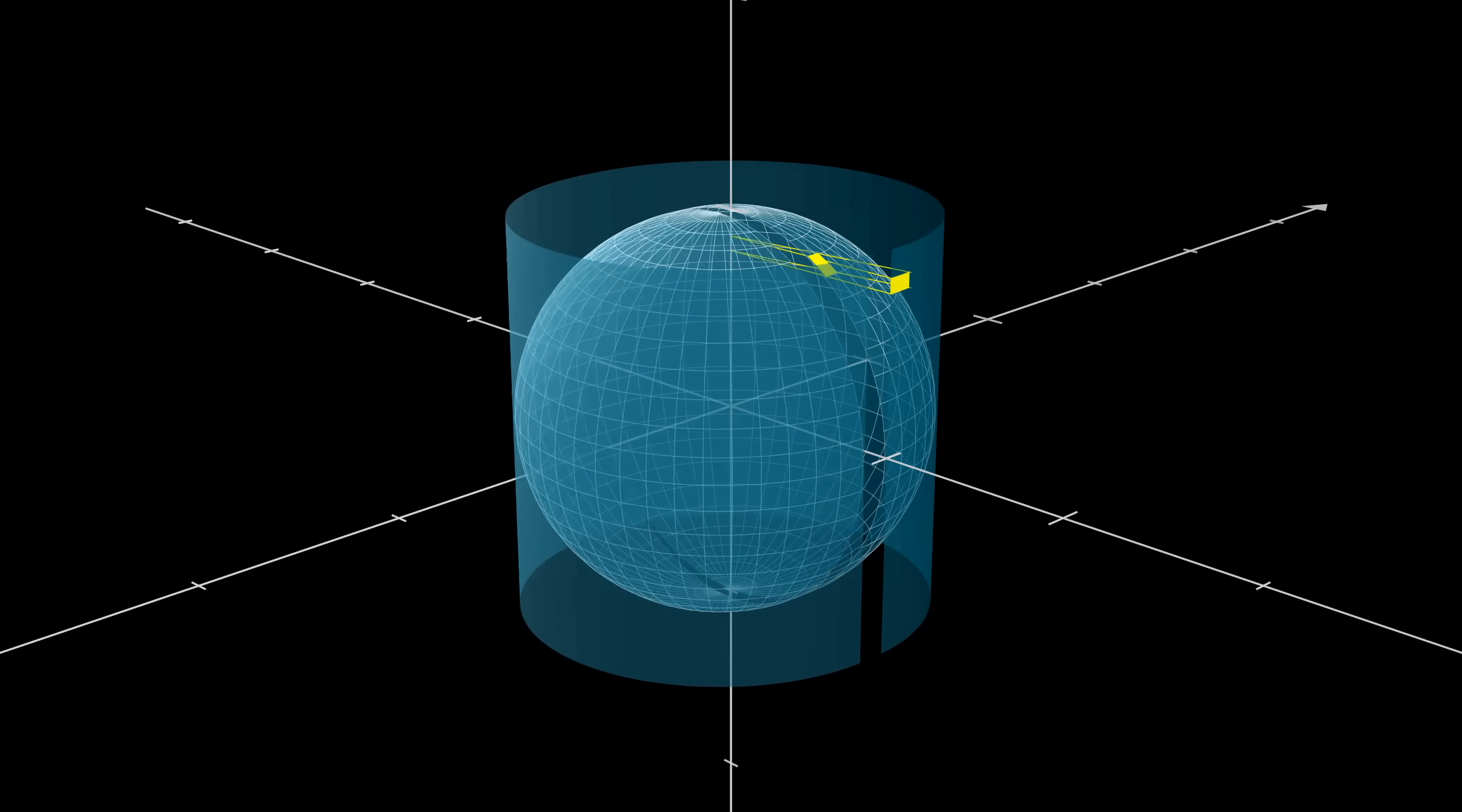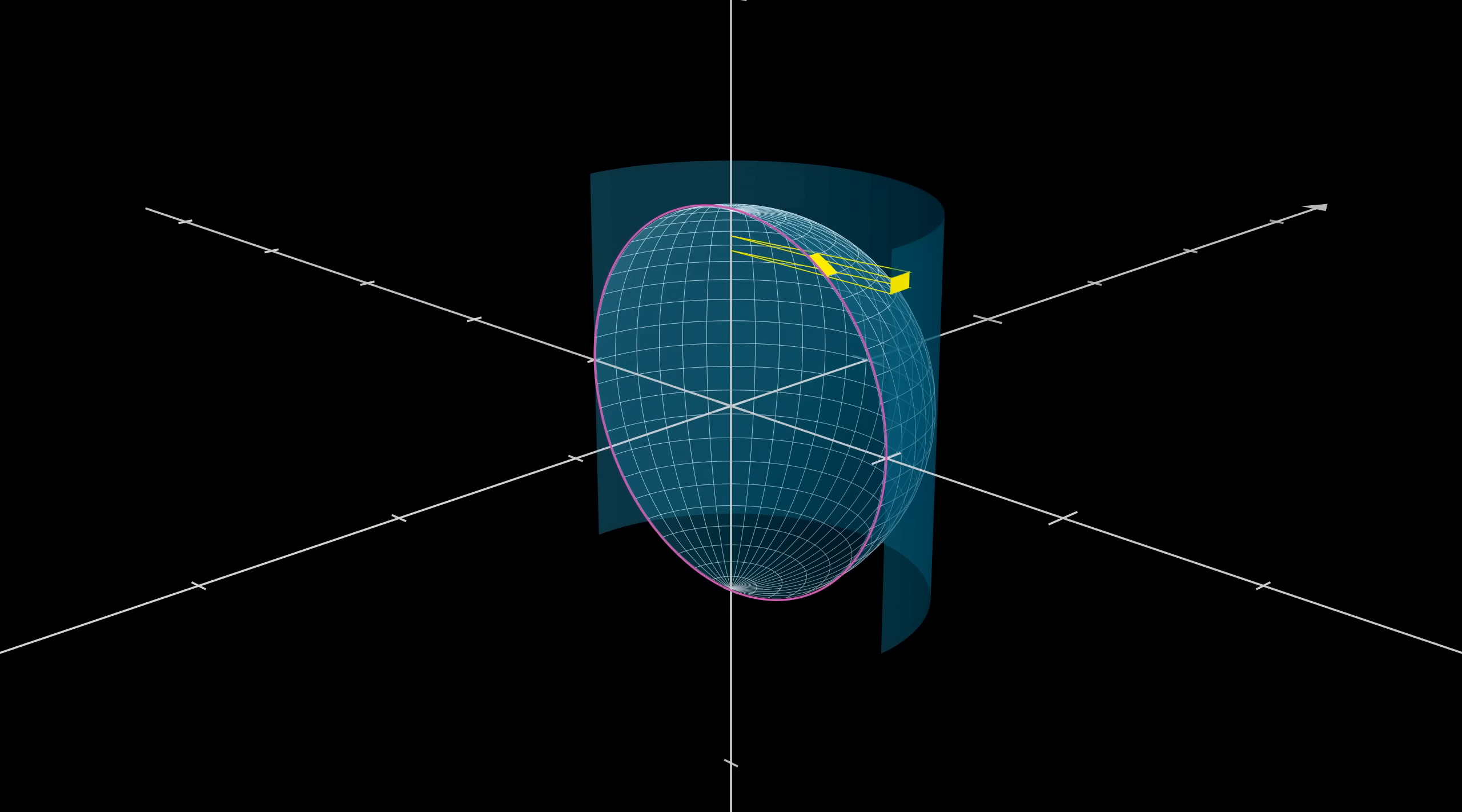Let me go ahead and cut away half of the sphere so that we can get a better look. For any mathematical problem solving, it never hurts to start by giving things names. So let's say that the radius of the sphere is r, and for one specific rectangle, let's call the distance between that rectangle and the z-axis d.